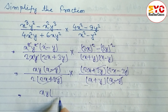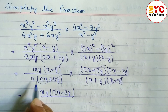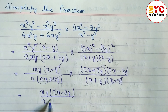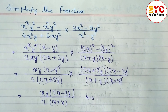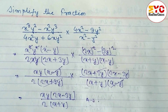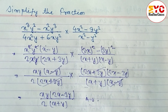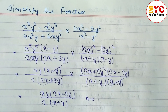Let's write the remaining variables. We have x y, then 2x minus 3y, divided by 2 and x plus y. So this is the answer of this rational expression — very short, sweet, and simple.